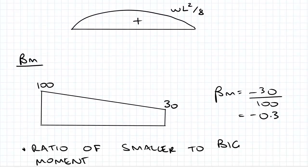I've also discussed beta M, so that's a moment ratio. It's the ratio of the smaller to big moment, so that's why we get minus 30 on 100 equals minus 0.3. This was for single curvature. It's important to note that if you have double curvature it would be positive.